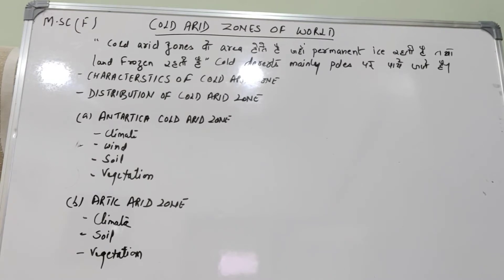सबसे पहले इसकी definition बता दूँ — cold arid zones वो areas होते हैं जहाँ permanent बर्फ रहती है और वहाँ की land एकदम जमी हुई होती है, land frozen होती है। ये cold deserts होते हैं, ये mainly poles पर पाए जाते हैं। ये deserts बहुत ज़्यादा cold, बहुत ज़्यादा ठंड, और बहुत ज़्यादा बर्फ जमने की वजह से बनते हैं।